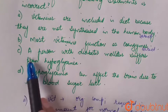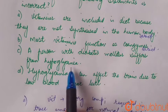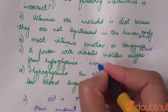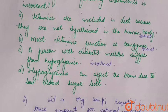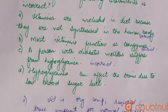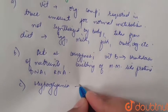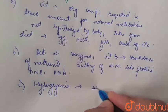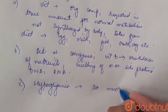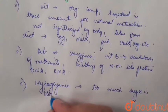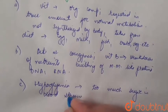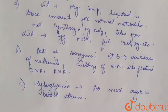The next statement is: a person with diabetes mellitus suffers from hypoglycemia. This is an incorrect statement. Hypoglycemia occurs when people with diabetes mellitus have too much sugar in their bloodstream — not all diabetes patients suffer from hypoglycemia. So statement three is the incorrect statement.